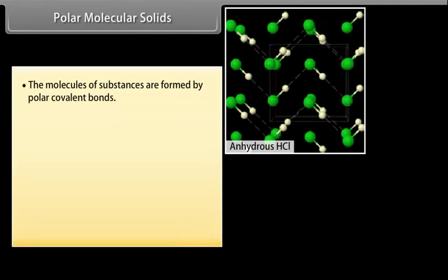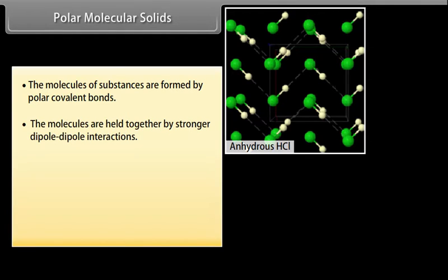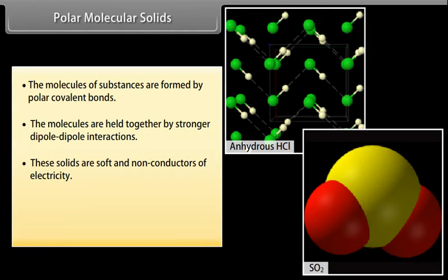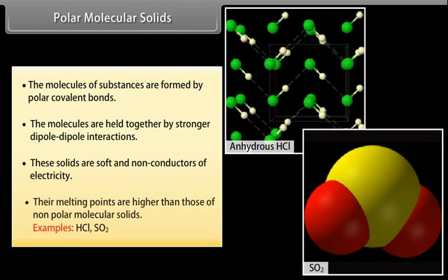Polar molecular solids: The molecules of substances are formed by polar covalent bonds. The molecules are held together by stronger dipole-dipole interactions. These solids are soft and non-conductors of electricity. Their melting points are higher than those of non-polar molecular solids. Example: HCl.